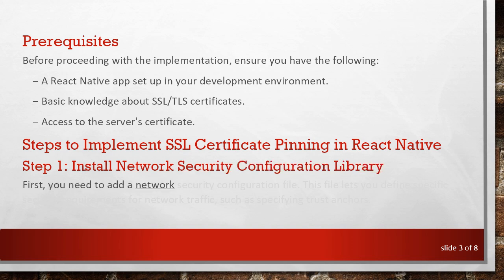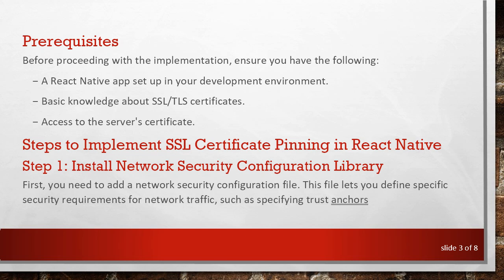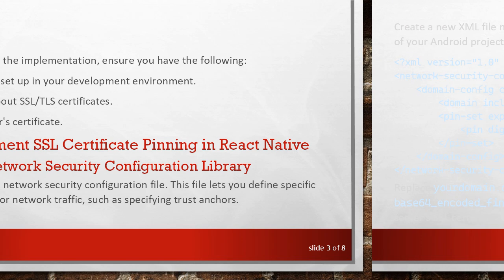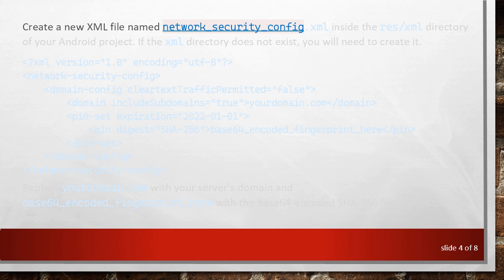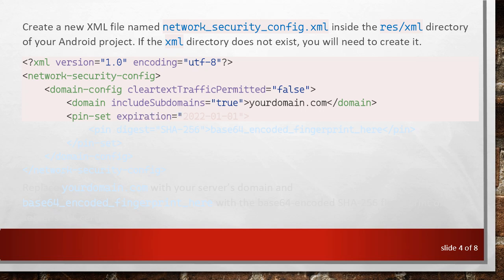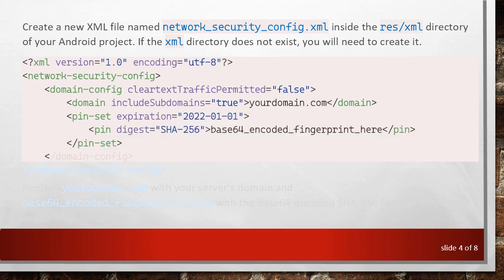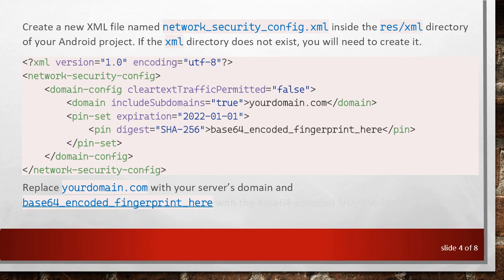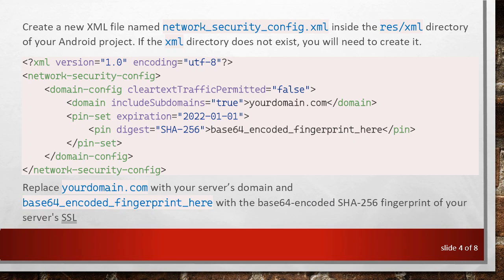First, you need to add a network security configuration file. This file lets you define specific security requirements for network traffic, such as specifying trust anchors. Create a new XML file named network_security_config.xml inside the res/xml directory of your Android project. If the XML directory does not exist, you will need to create it. Replace your-domain.com with your server's domain and base64_encoded_fingerprint_here with the base64-encoded SHA-256 fingerprint of your server's SSL certificate.